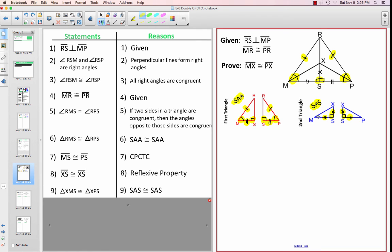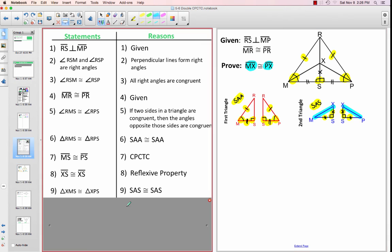And now once we prove those triangles, we can get our end pieces that we really wanted. So we really wanted MX and PX, and now we can go ahead and get those because of CPCTC. So we had to prove two triangles congruent in order to get what we really wanted in the end.